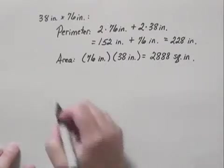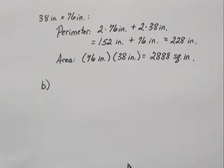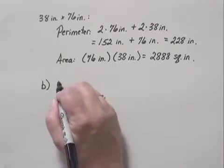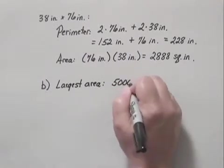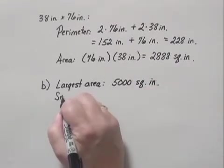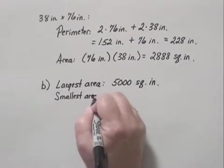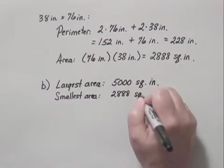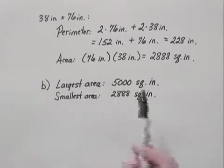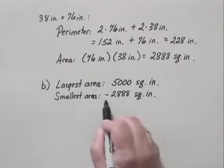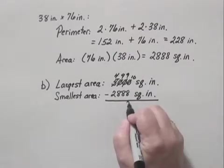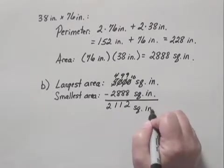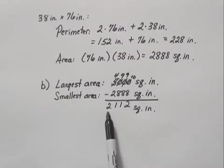Now that completes part A. Part B, we were asked to find out the number of square inches by which the area of the largest table exceeds the area of the smallest table. We will do that by subtracting. The area of the largest table was 5,000 square inches. And the area of the smallest table was 2,888 square inches. To find the difference, the amount by which this exceeds this, we subtract: 5,000 minus 2,888. If we do the subtraction, we have 2,112 square inches. So the largest table exceeds the smallest table by 2,112 square inches.